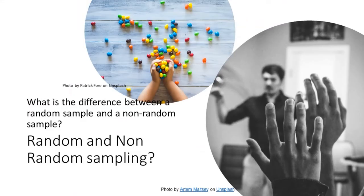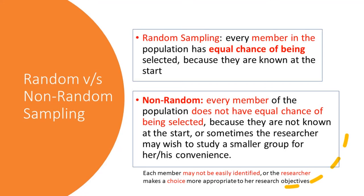By now you must have guessed the difference between a random sample and a non-random sample. In random sampling, every member in the population has an equal chance of being selected because they are known at the start. In non-random sampling, every member of the population does not have an equal chance of being selected because they are not known at the start, or the researcher may wish to study a smaller group for convenience, or the researcher makes a choice more appropriate to their research objectives.